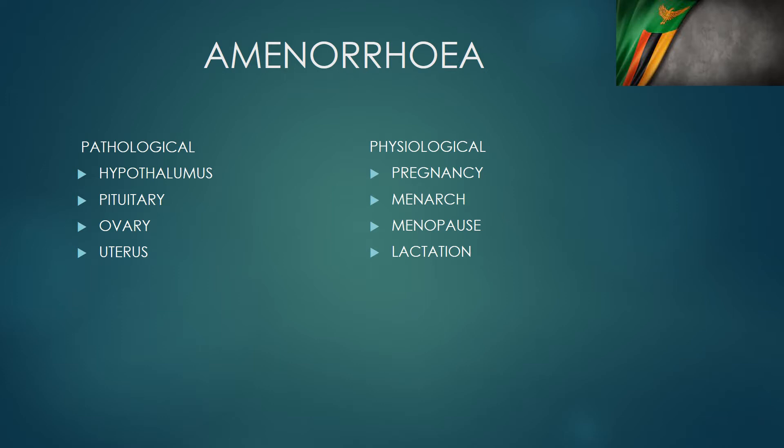From that, we know that amenorrhea can be pathological or it can be physiological. We know it's physiological in several states. Pregnancy is a state where amenorrhea is normal or physiological. When a girl has not attained menarche, amenorrhea in that case is physiological. When a woman is menopausal, we know that that state is physiological. And also when she's breastfeeding, we know that amenorrhea is physiological in that situation.